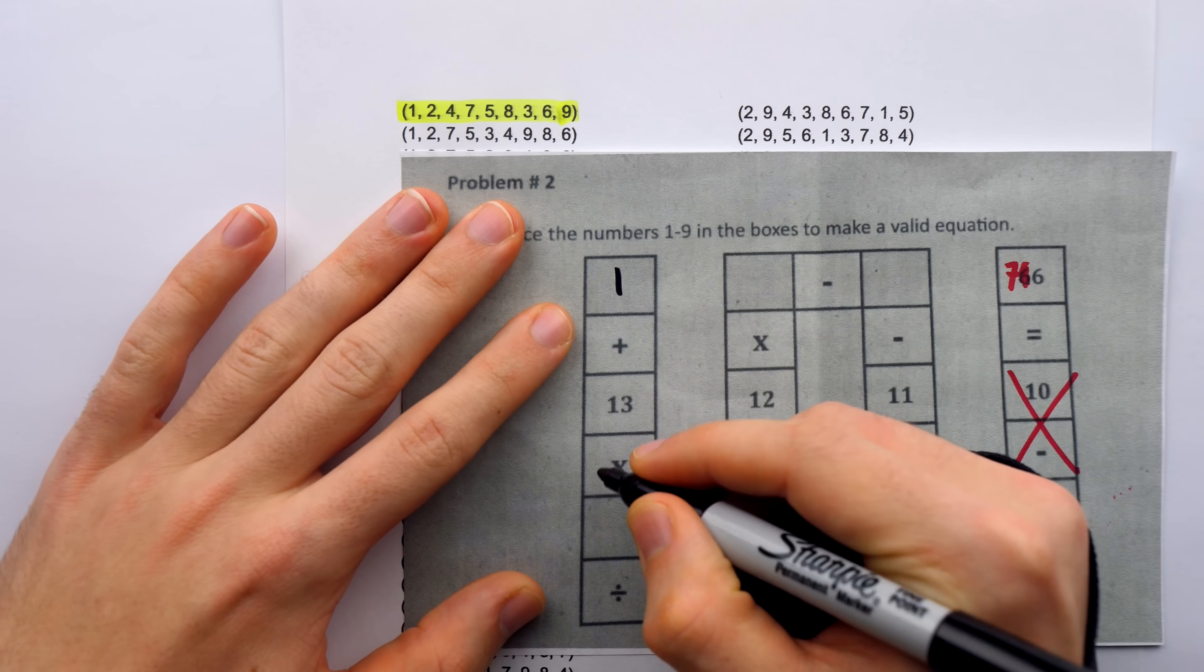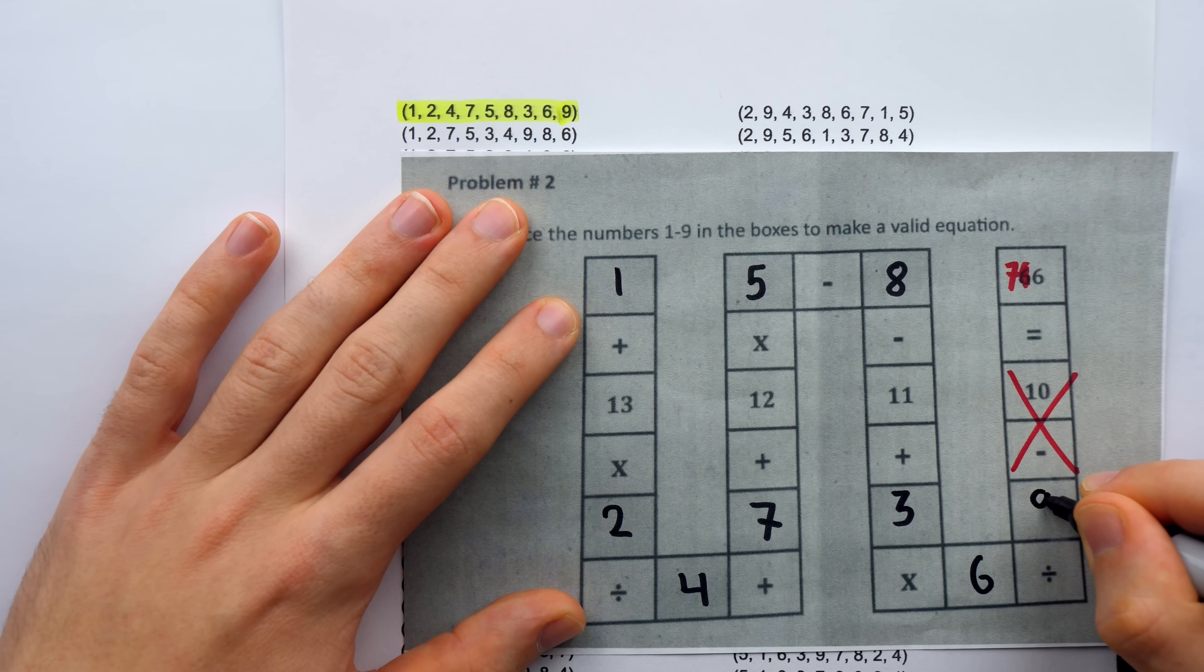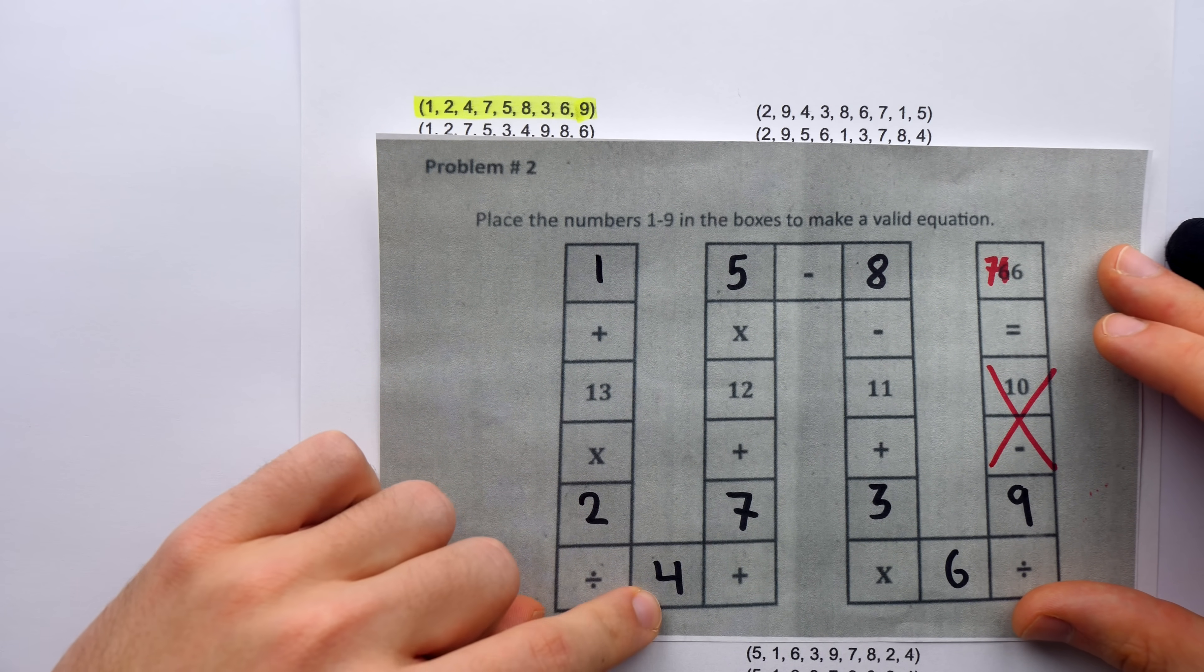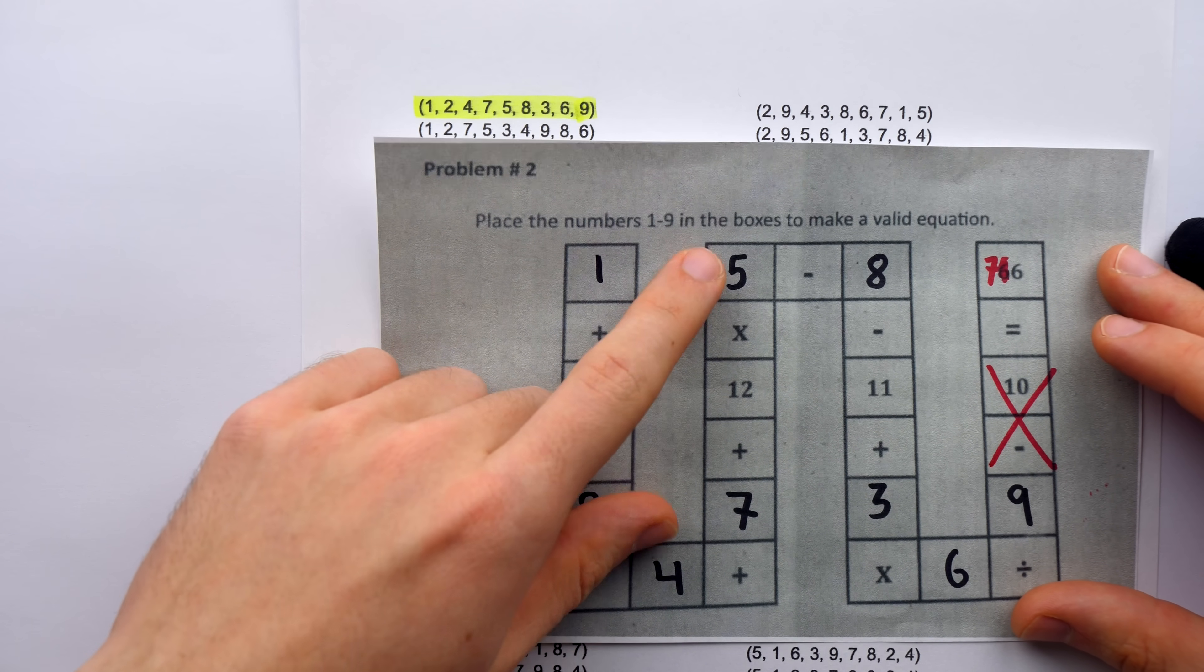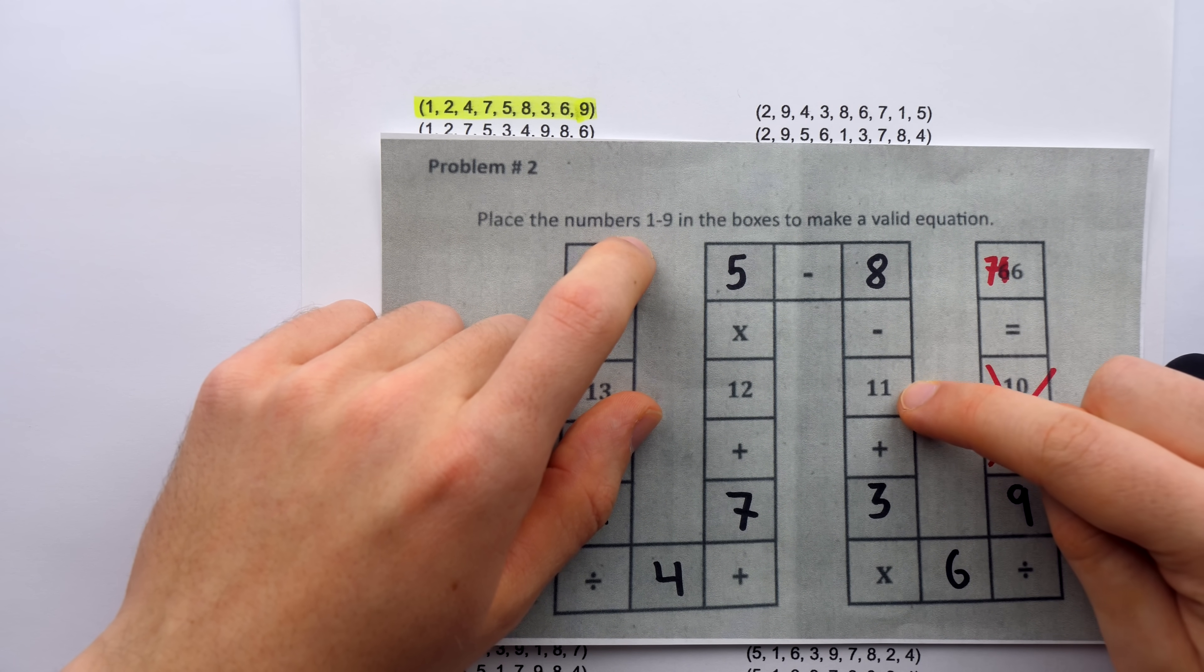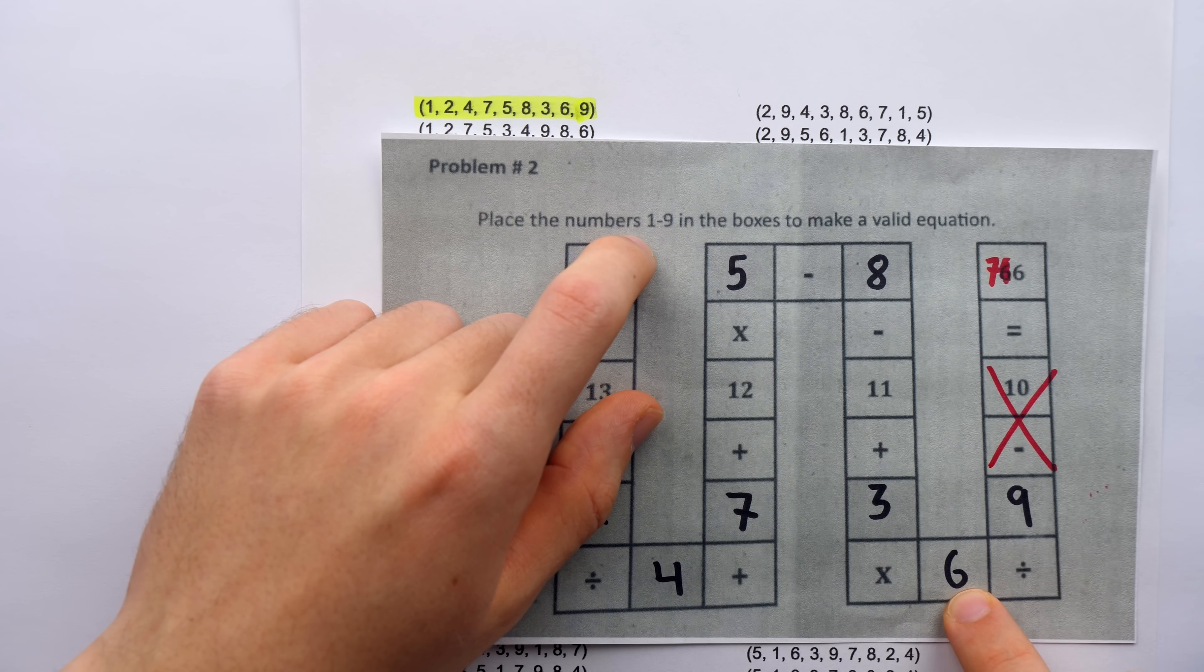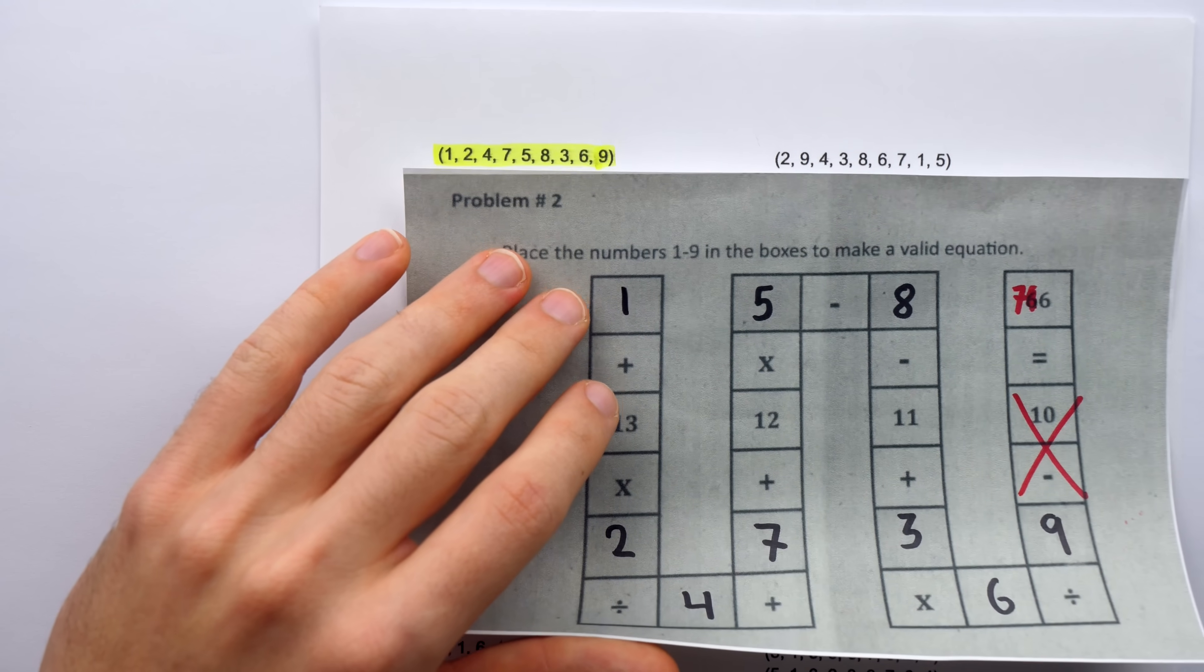Why don't we just try out this first one for an example, and to finally see this equation be made true. The numbers are 1, 2, 4, 7, 5, 8, 3, 6, and 9. 1 plus 13 is 14, times 2 is 28, divided by 4 is 7, plus 7 is 14, plus 12 is 26, times 5 is 130, minus 8 is 122, minus 11 is 111, plus 3 is 114, times 6 is 684, divided by 9 is 76. Well, there you go.